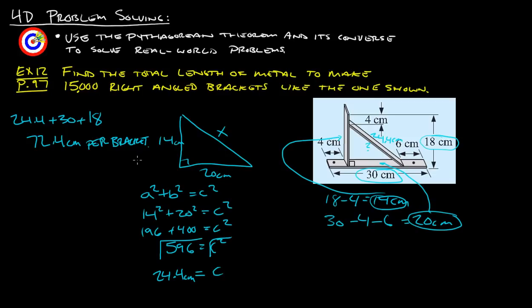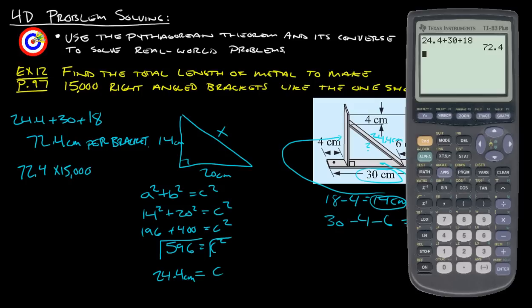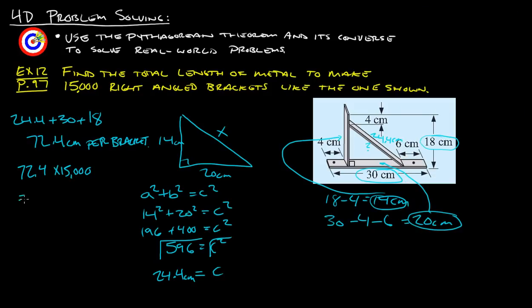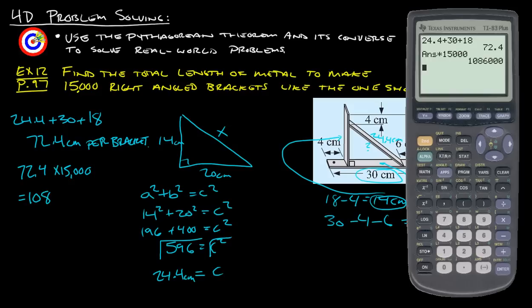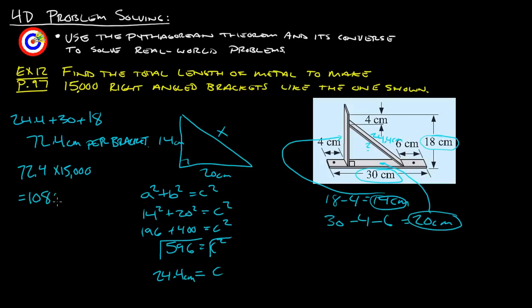Now the thing is we need 15,000 of those brackets. We've got to take that and multiply our 72.4 times 15,000. We already got our 72.4 in there, so multiply it by 15,000 and we get 1,086,000.